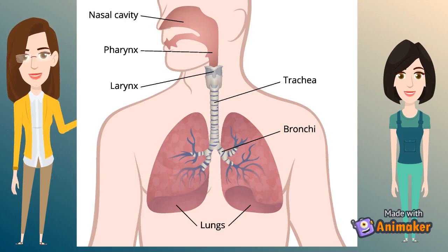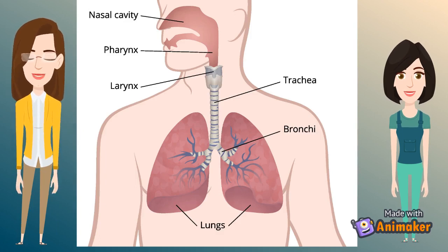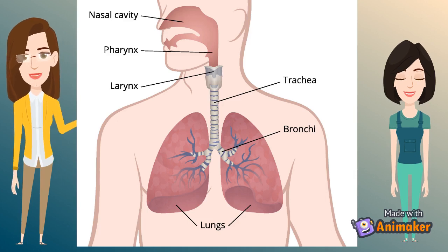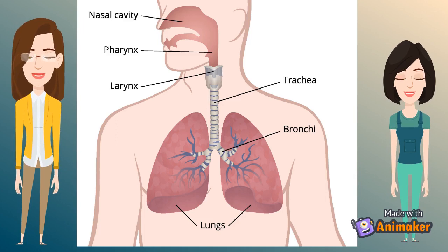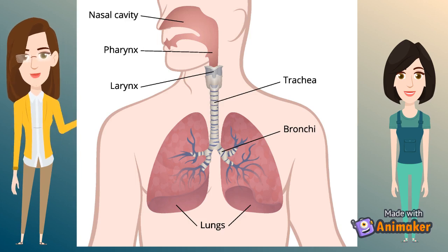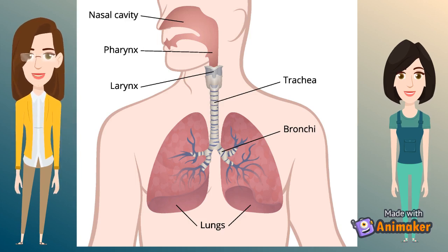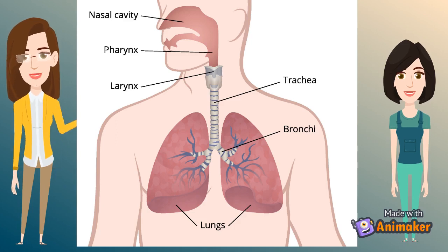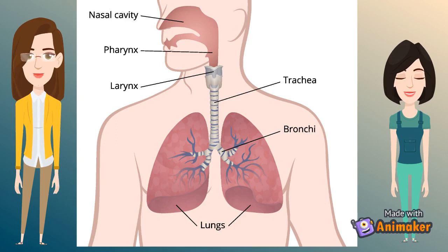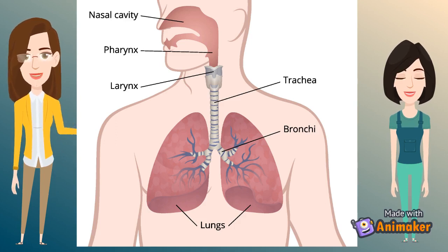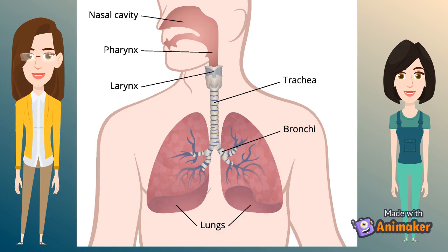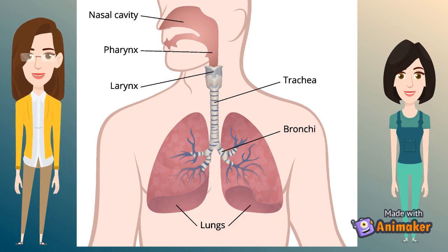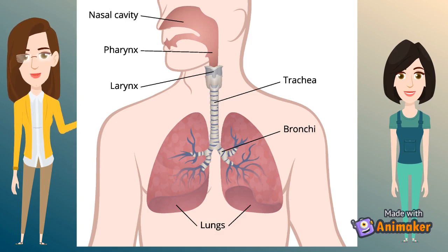As you can see in the diagram, after the trachea comes the bronchi. The trachea splits into two tubes called bronchi which enter each lung individually. The bronchi divide into secondary and tertiary bronchioles, and these further branch out into small air sacs called the alveoli. The alveoli are single-cell sacs of air with thin walls that facilitate the exchange of oxygen and carbon dioxide molecules into and away from the bloodstream.